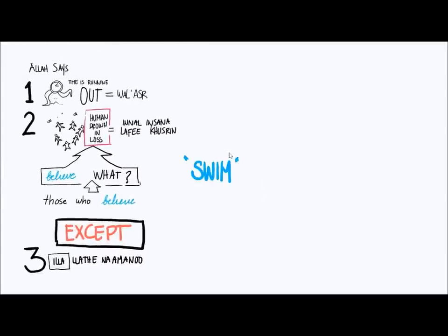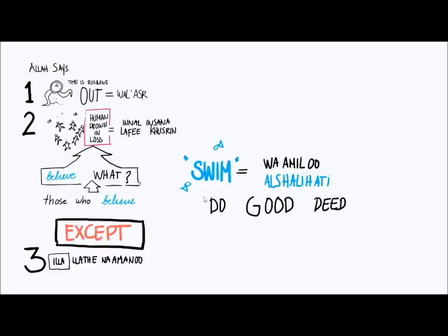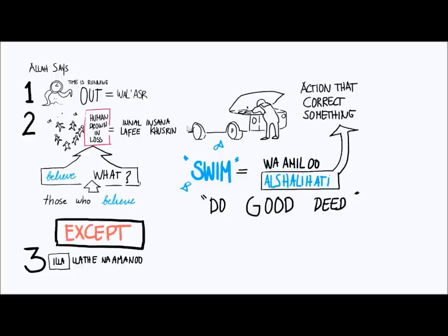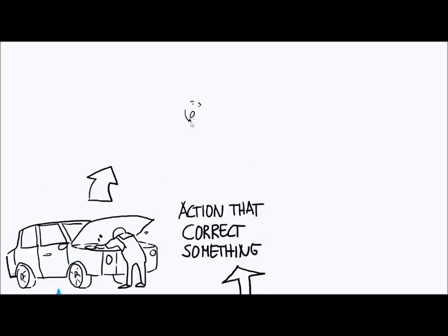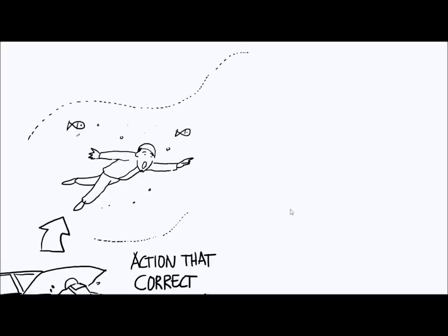And if they do come to believe that, and they correct their iman, what's necessarily going to happen? They're gonna swim and move upwards. How does Allah describe this action? Wa amilu as-salihat - they do good things. They do things that help reconcile the situation. By the way, salih is an adjective here. Salihat - jama' mu'annath salim - which literally means that which corrects something. Something was wrong and it corrects it.